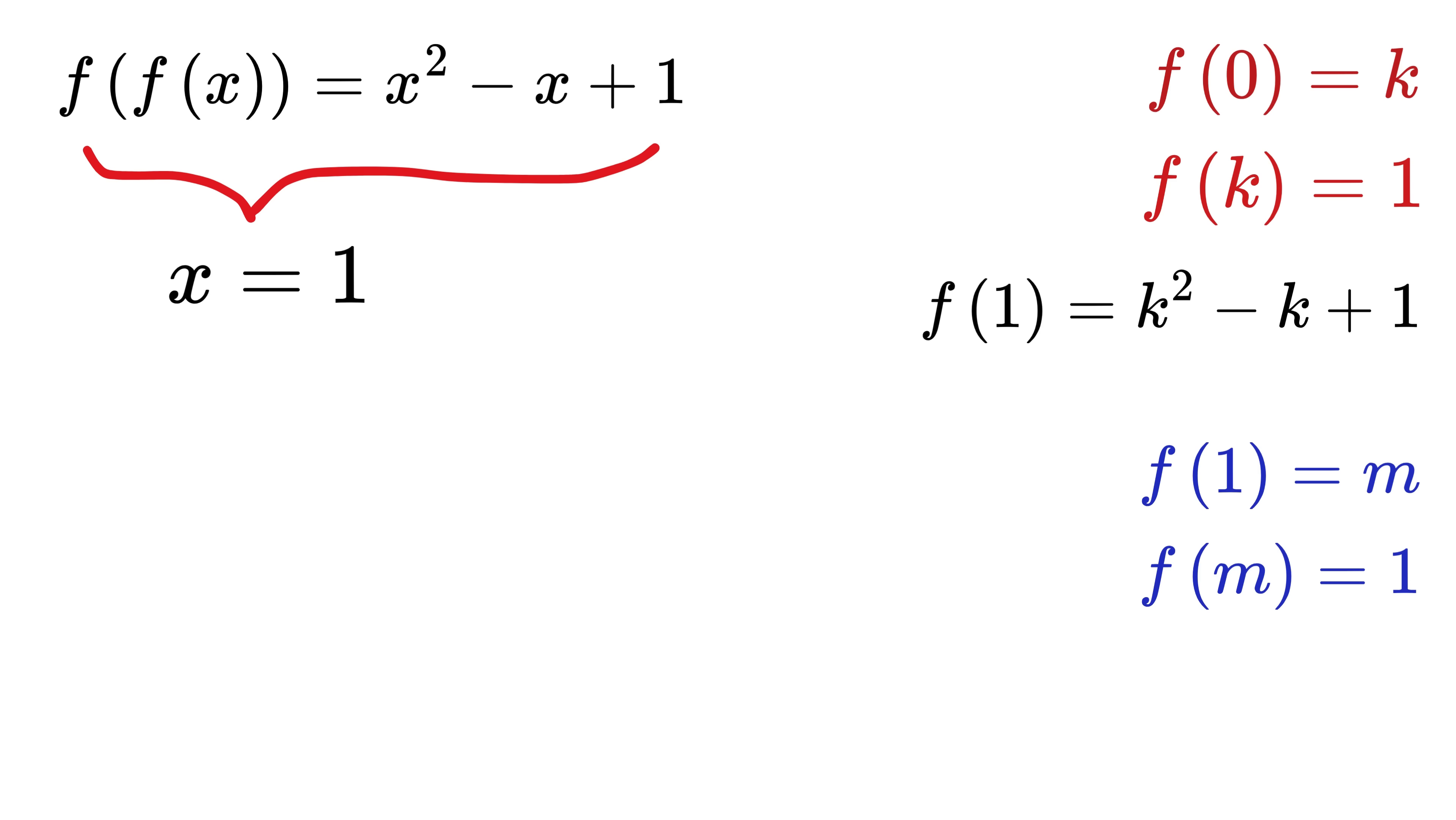Now, here comes the magic. Let us plug in the value of x as m. What do we get? We get f of f of m on the left-hand side. But f of m is just 1, right? So this becomes f of 1, which is simply m. So we get an important result, which is f of f of m equals m. Now, what about the right-hand side? We have x as m, and thus the right side will become m square minus m plus 1.